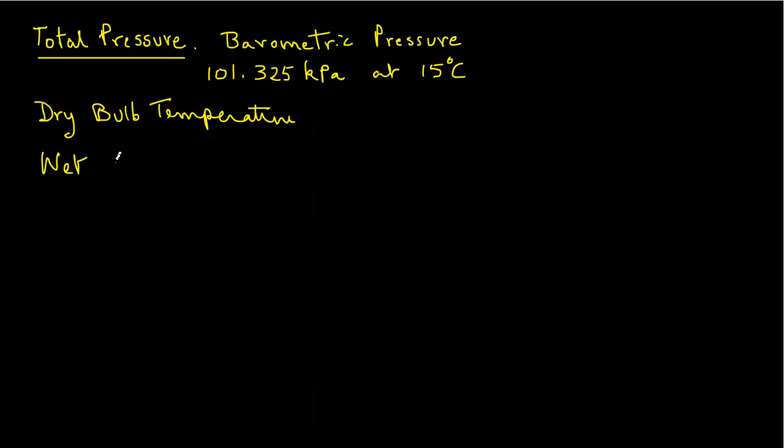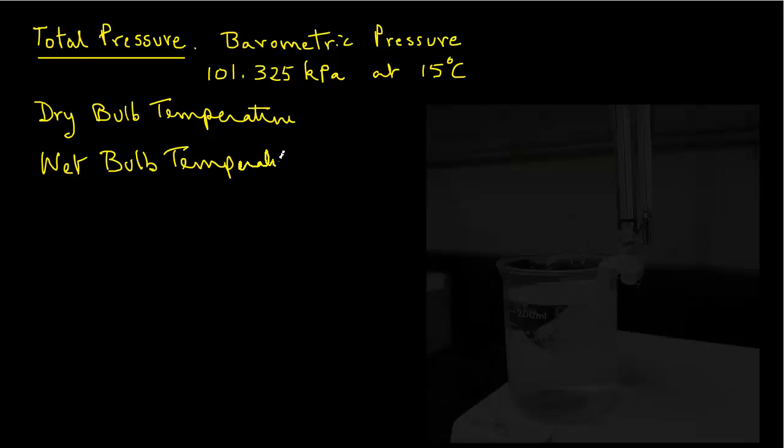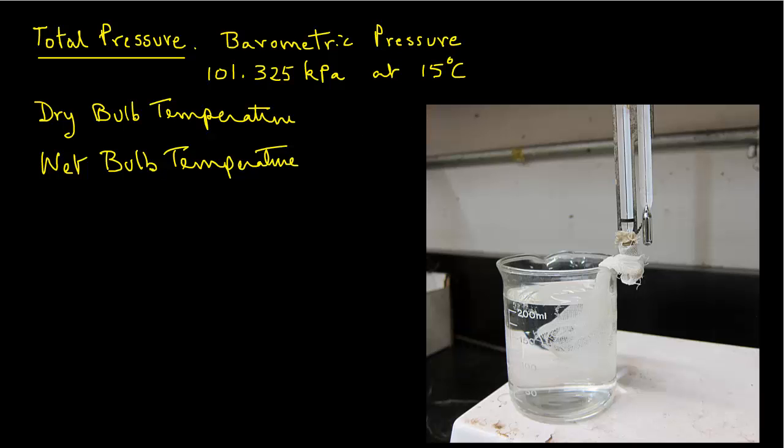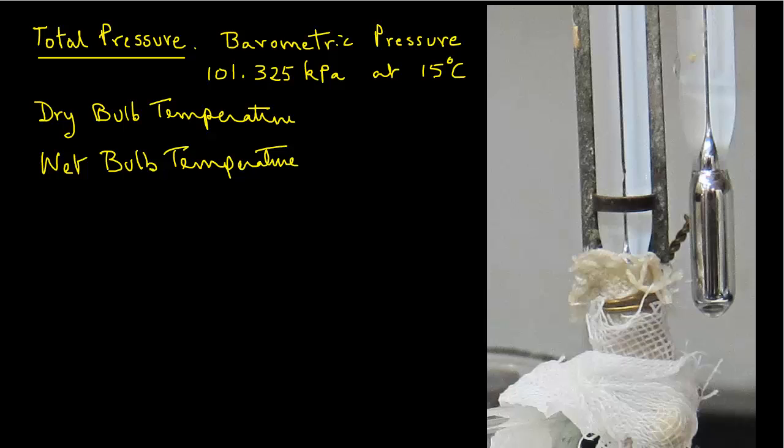Wet bulb temperature is a temperature that we measure by using a temperature sensor where the sensing element is covered with a wet sleeve. For example, the bulb of a thermometer is covered with a wet sleeve, then we record the wet bulb temperature. In addition, there must be a certain amount of airflow past the measuring sensor that has the wet sleeve on it. A minimum of 4 meters per second air velocity is required to avoid stagnant air engulfing the sensor.